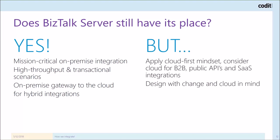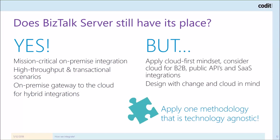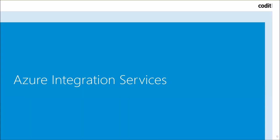You can have cloud-first advantages, and of course design with change and cloud in mind — which means make sure that you decouple your integrations and don't start any spaghetti interfacing. If you decouple, you can easily move one application to the cloud. For example, if you are running Dynamics AX on premises, it's likely that this application will move to the cloud within one, two, or maybe ten years, so make sure you're prepared for that. A very important statement to always bear in mind: apply one methodology regardless of the technology you're using.